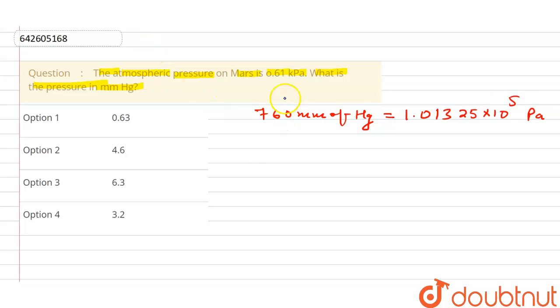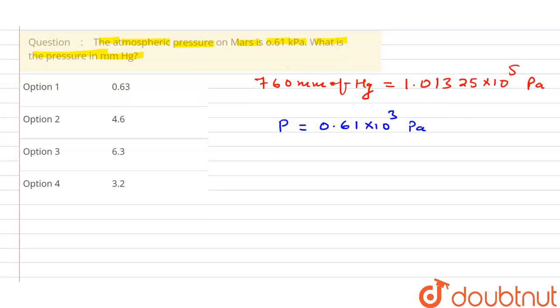From pascal we have to convert into mm of Hg. So we have given the atmospheric pressure that is 0.61 kilopascal. So first of all convert into pascal.